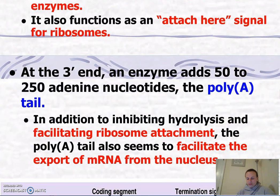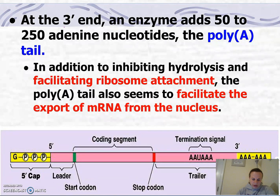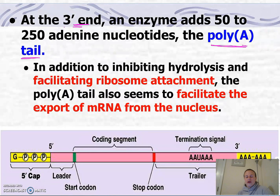At the three-prime end, we also want to provide protection. What we have there is called the poly-A tail, which is basically 50 to 250 repeated adenine nucleotides. This tail also inhibits hydrolysis of the messenger RNA by hydrolytic enzymes, facilitates ribosome attachment, and also facilitates the export of the messenger RNA from the nucleus.